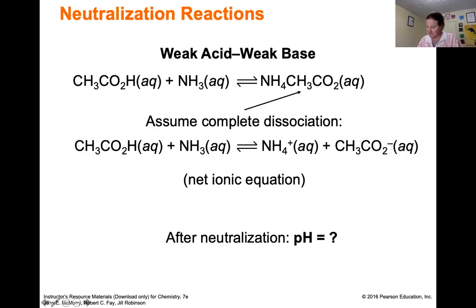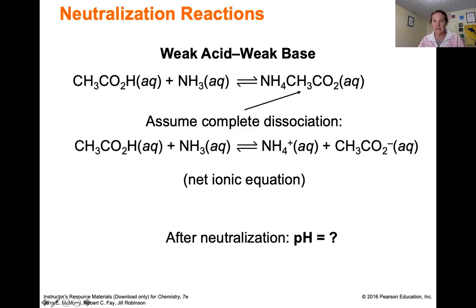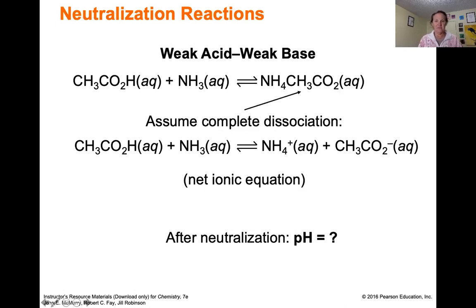At this point, turn to page 590 and try problem 15.2. This one goes all the way back to Chapter 13: if we're adding reactions together to end up with an overall neutralization reaction, can you figure out the Kn? Kn means the equilibrium constant for the neutralization reaction — in this case, the equilibrium constant for that second reaction. Take a break, come back, and we'll discuss the next topic.